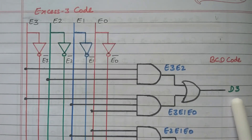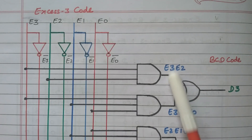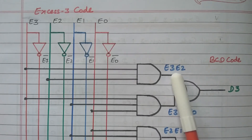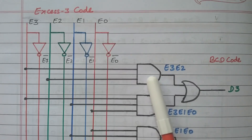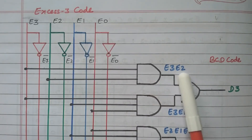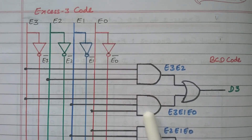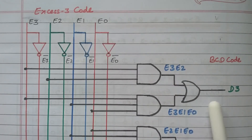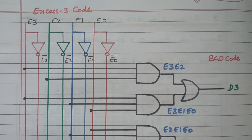For D3: E3·E2 is obtained from one AND gate, and E3·E1·E0 from another AND gate. These two are added by an OR gate to give D3, which is the MSB of the BCD code.